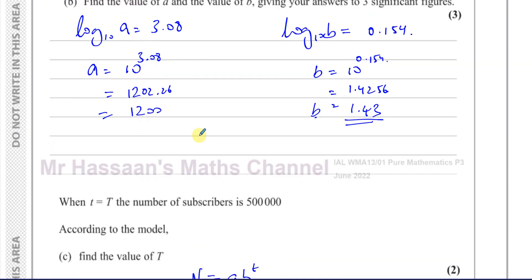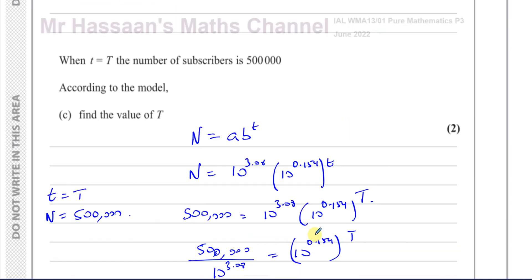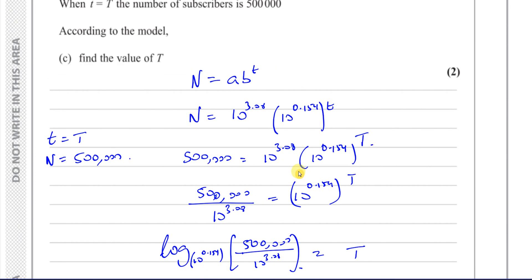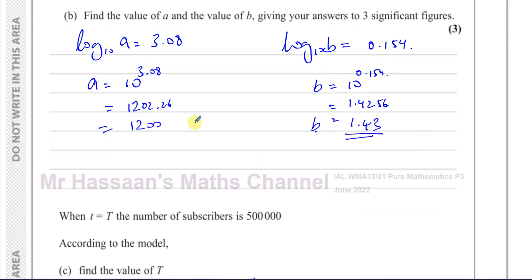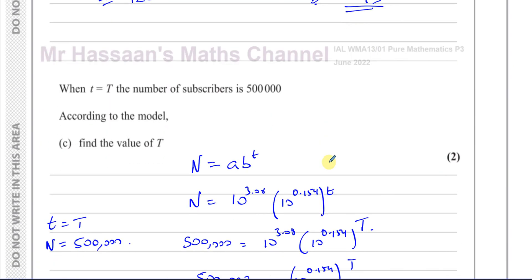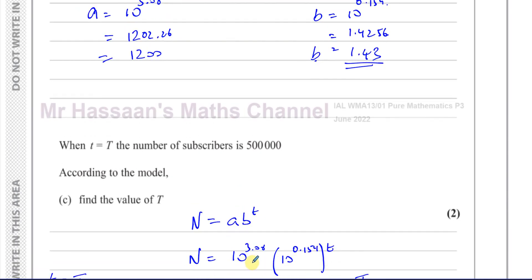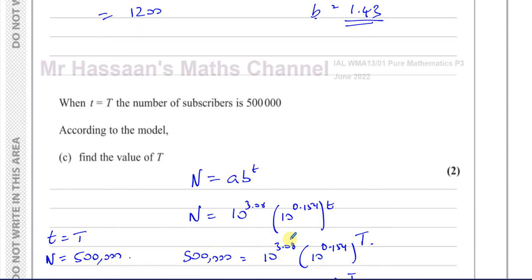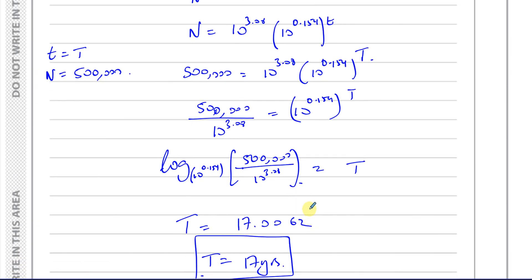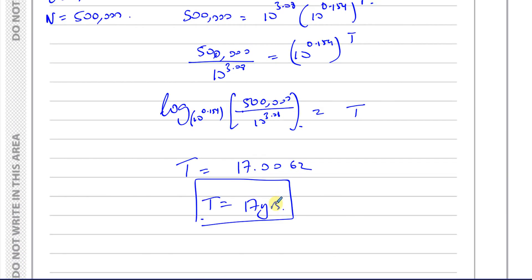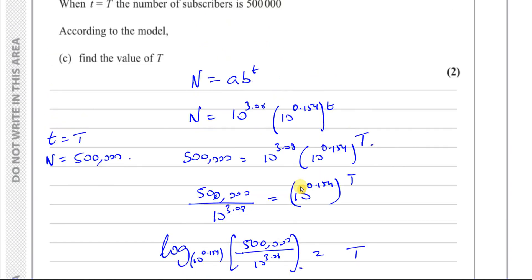One thing to note: I could have used the rounded values 1200 and 1.43 for A and B instead of the exact forms 10^3.08 and 10^0.154. I kept the exact forms to maintain accuracy, but using the rounded values is perfectly fine in this question. That concludes part C.